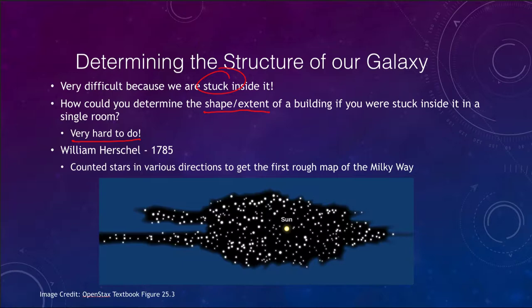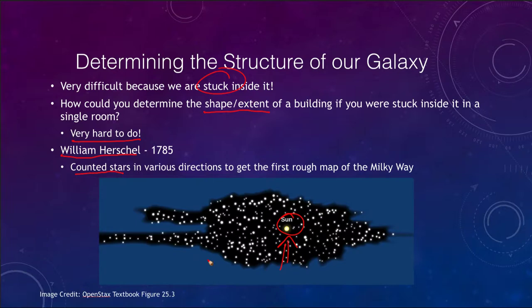We have a very similar issue with our galaxy — we cannot easily see through it. In fact, one astronomer, William Herschel, in 1785 counted stars in various directions to try to get the first rough map of the Milky Way. What he found was our sun relatively close to the center of the galaxy, but he did notice that the galaxy was flattened — there were far more stars in this direction than in the up-and-down direction.